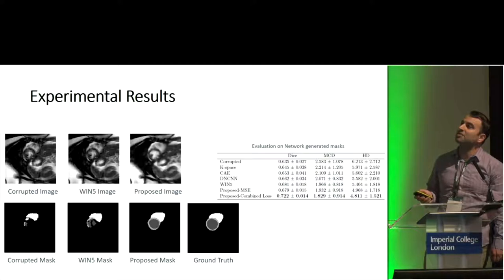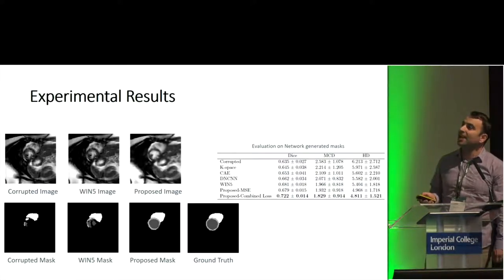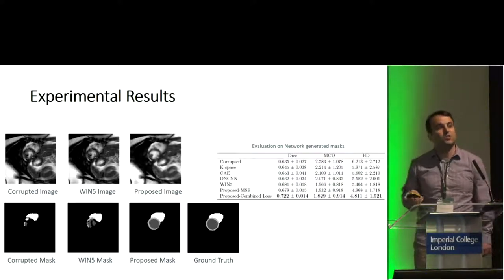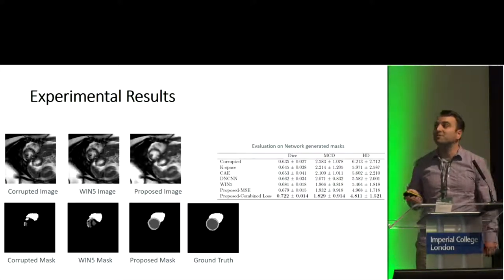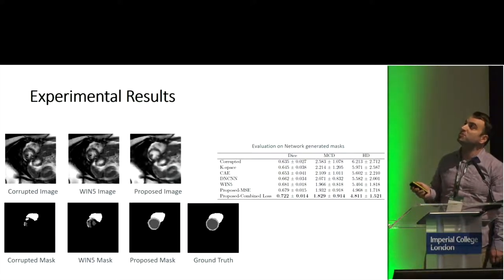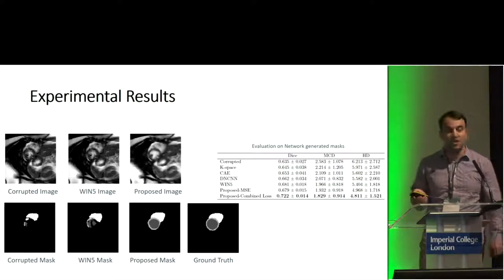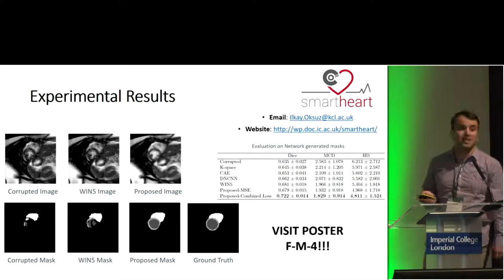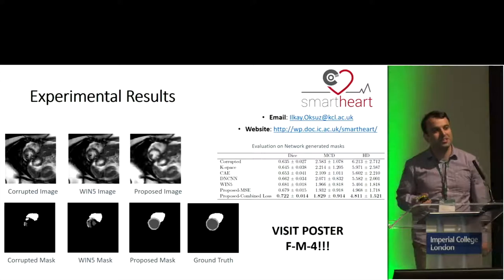To show you some results compared with the state-of-the-art algorithm: this is the corrected image we generate, and the accompanying segmentation mask generated using the same segmentation network, in comparison with the ground truth — highlighted also with quantitative measures of segmentation in this table. If you want to learn more, please visit my poster, and thank you for your attention.